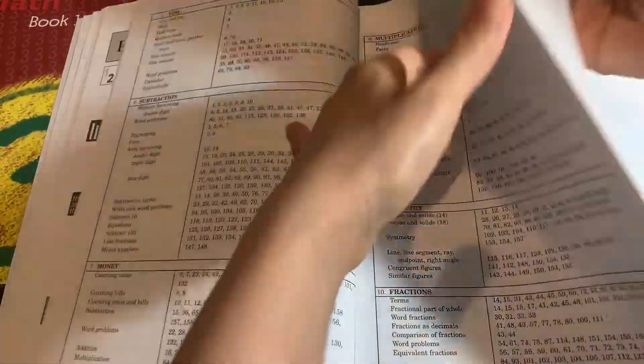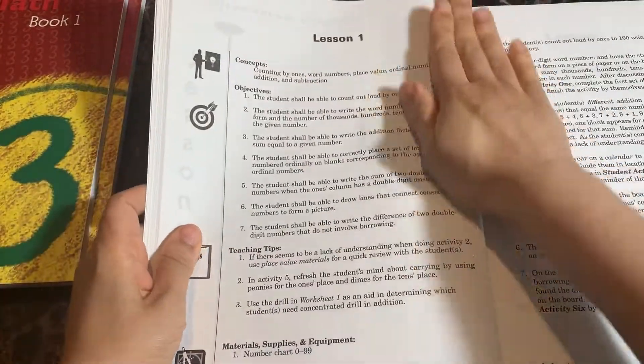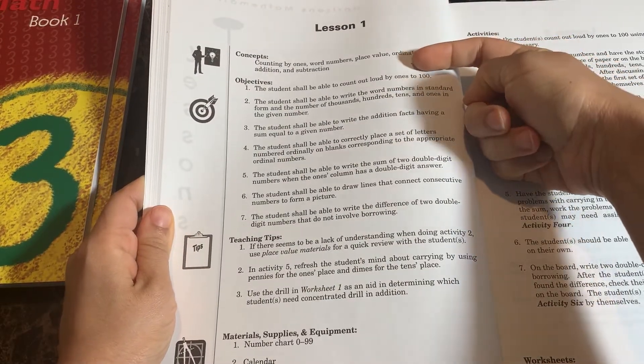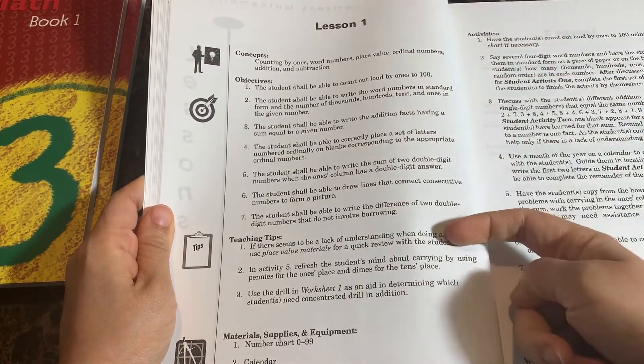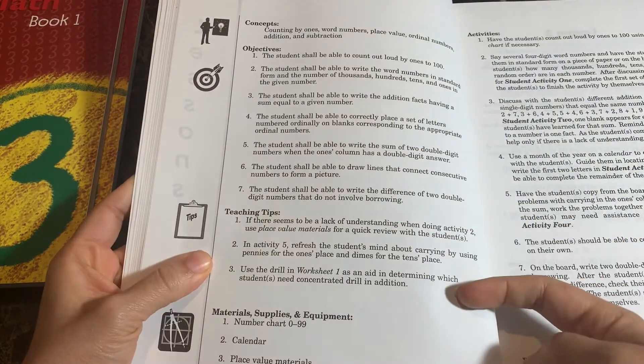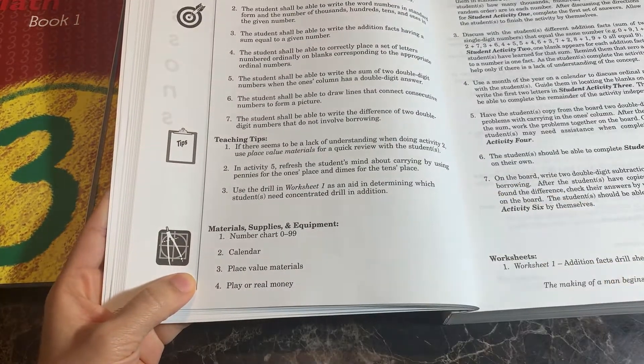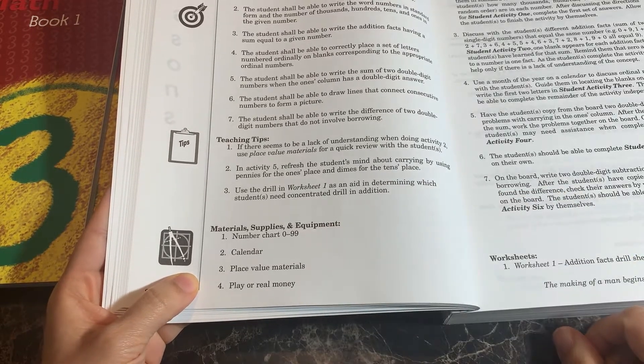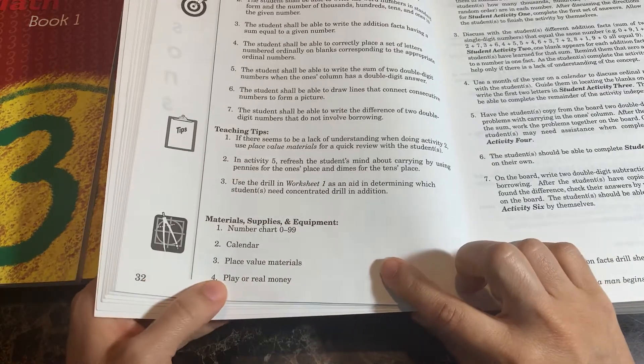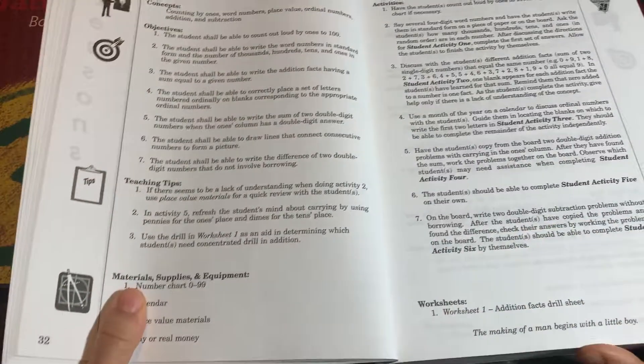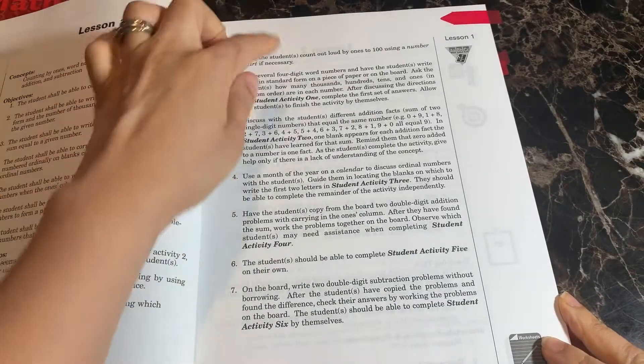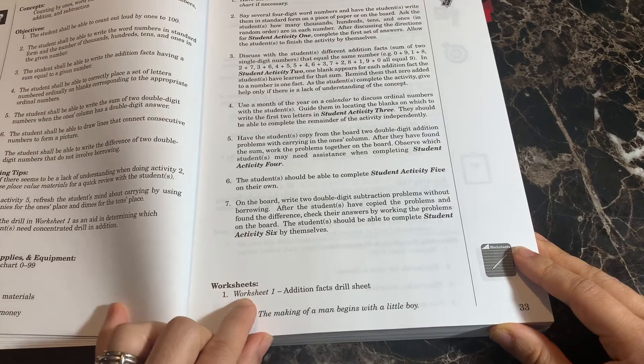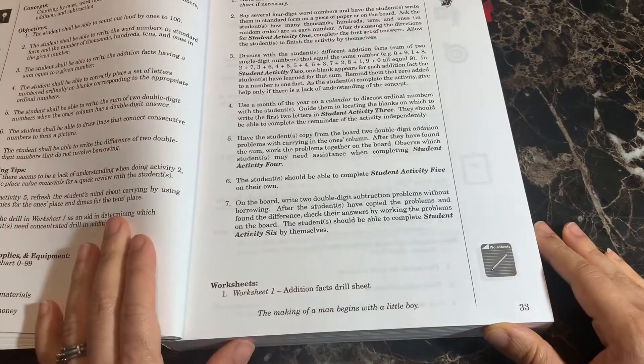It talks about the worksheets and where worksheets are used. And I'll actually talk about that in just a minute. So I'm going to move forward to the first lesson. So this is how it's laid out. For every single lesson in the teacher book, it talks about the concepts that will be introduced, the objectives of that lesson, they provide you teaching tips, then they tell you the materials that you'll need. So in this case, for lesson one, for the third grade, you need a number chart, you need a calendar, place value materials, play or real money. And then it talks about different activities that you can do to introduce the next lesson. And then it says you can also use worksheet one.